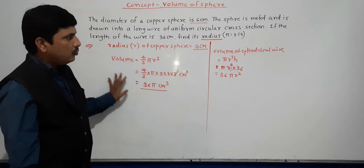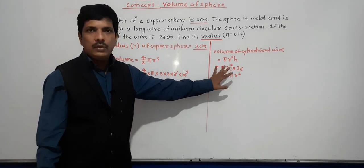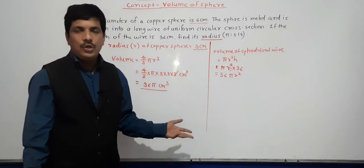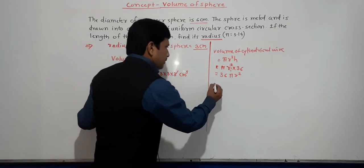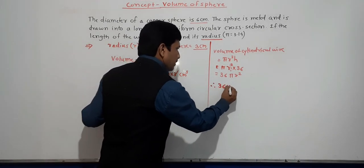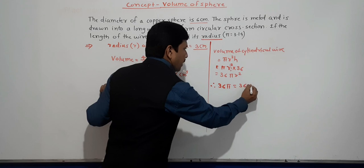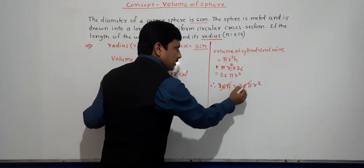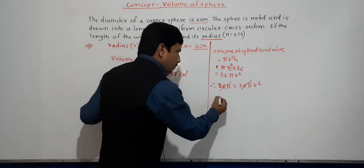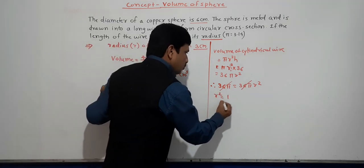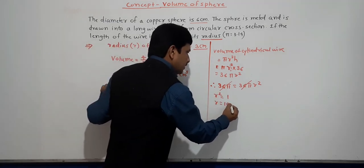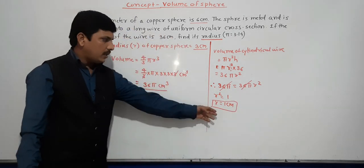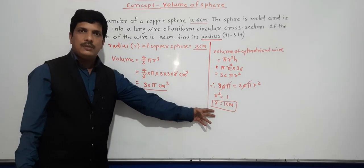Since the whole material is used to make the wire, the volumes are equal. So 36 pi equals 36 pi r square. Cancelling 36 pi from both sides gives r square equals 1, therefore radius equals 1 centimeter. That is our answer: r equals 1 centimeter.